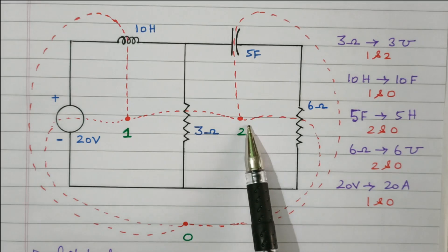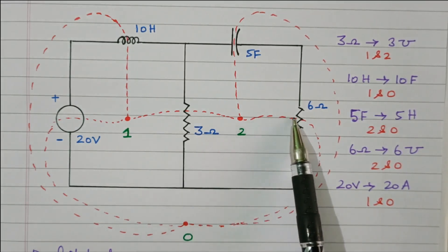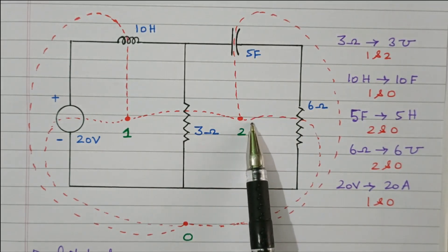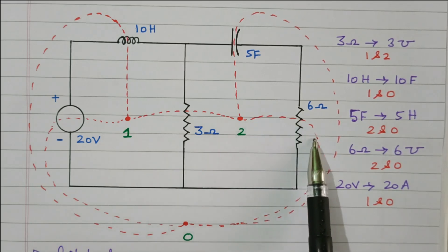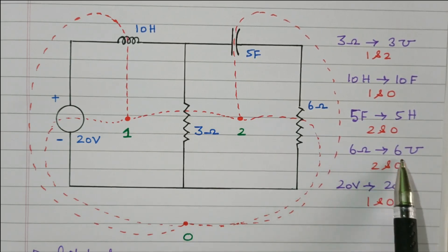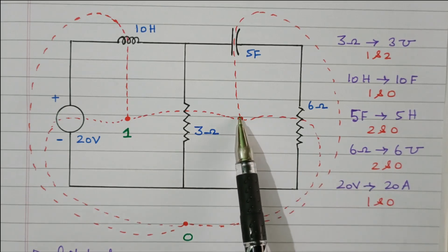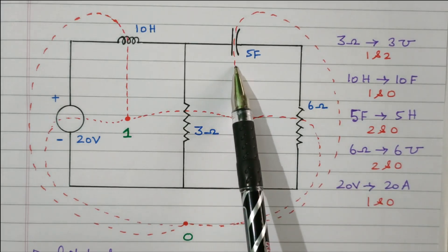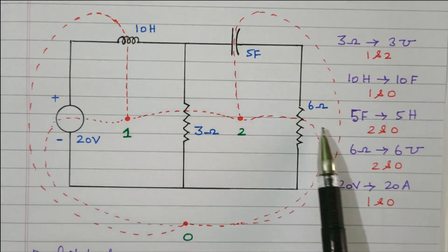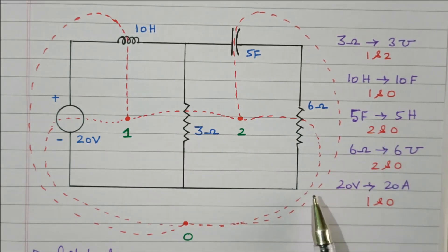Now we will see what elements are connected between 2 and 0. There are two elements connected: one is the 6-ohm resistor and one is the 5-Farad capacitor. We will draw a dotted line between 2 and 0 through the 6-ohm resistor. This 6-ohm will be converted into 6 Mho conductance, connected between 2 and 0. And one more line is drawn through the 5-Farad capacitor between 2 and 0. This 5-Farad capacitor will be converted into a 5-Henry inductor, connected between 2 and 0.